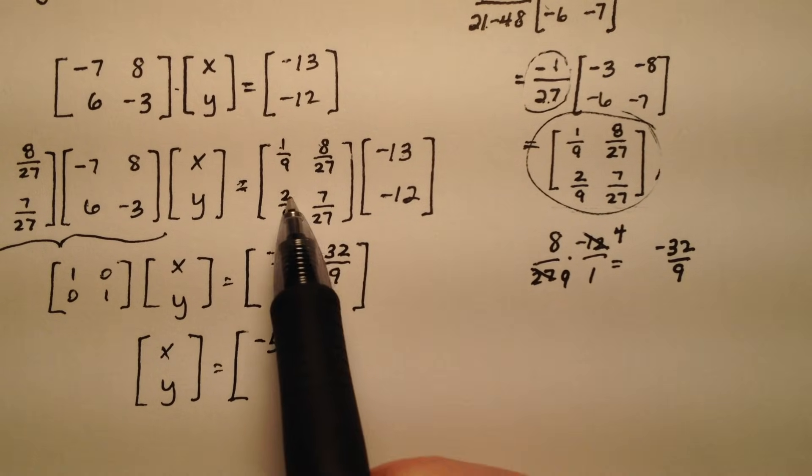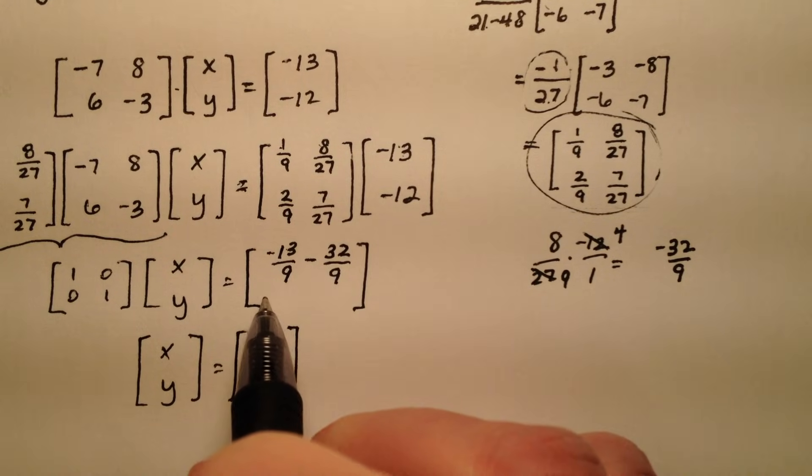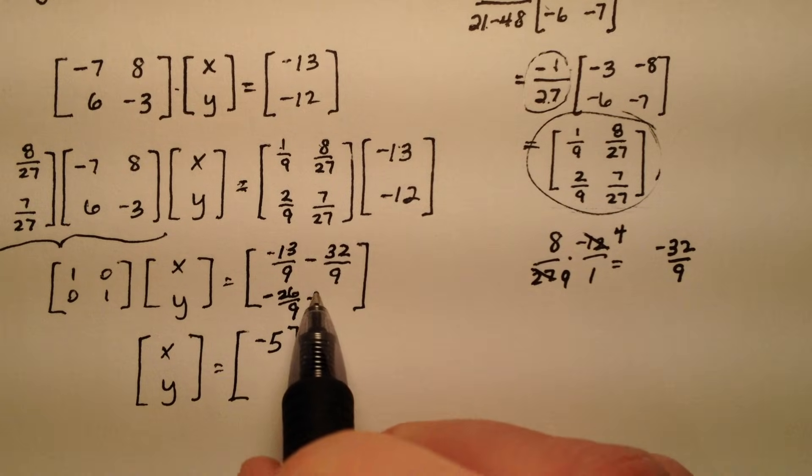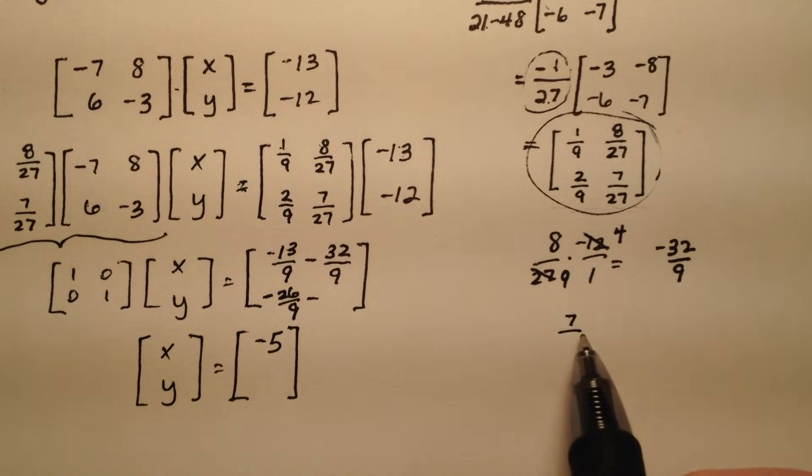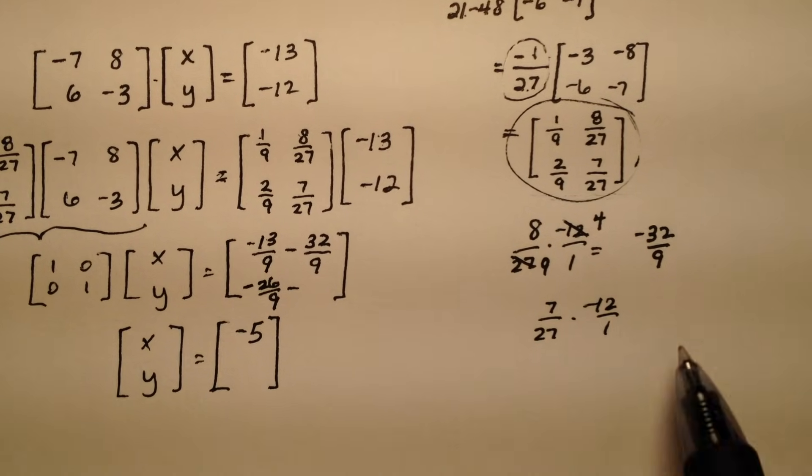So let's do the y value. So 2 9ths times negative 13 will end up being negative 26 9ths minus 7 27ths times negative 12 over 1. Same thing can happen.